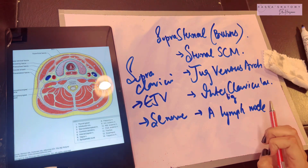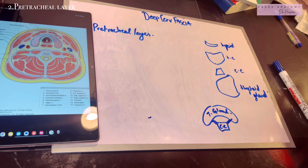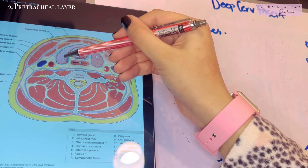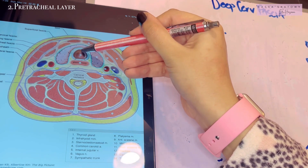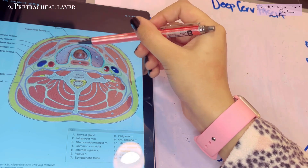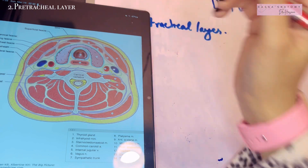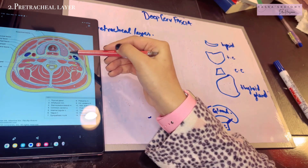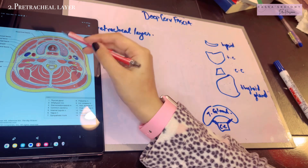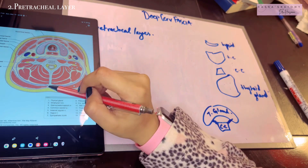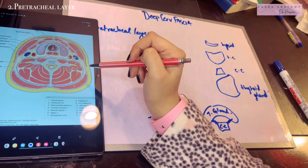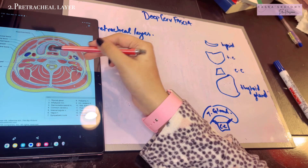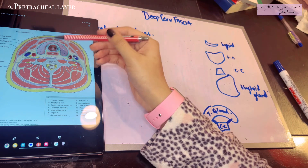Now let's move on to the pre-tracheal layer of the deep cervical fascia. This layer encloses the anterior part of the neck: the thyroid gland, behind that the trachea, and behind that the esophagus, along with the infrahyoid muscles. Pre-tracheal means before the trachea. The pre-tracheal layer is responsible for forming the capsule of the thyroid gland. It has a visceral part and a muscular part — the muscular part covers the infrahyoid muscles, while the visceral part encloses the thyroid gland, trachea, esophagus, recurrent laryngeal nerves, and some parathyroid glands.